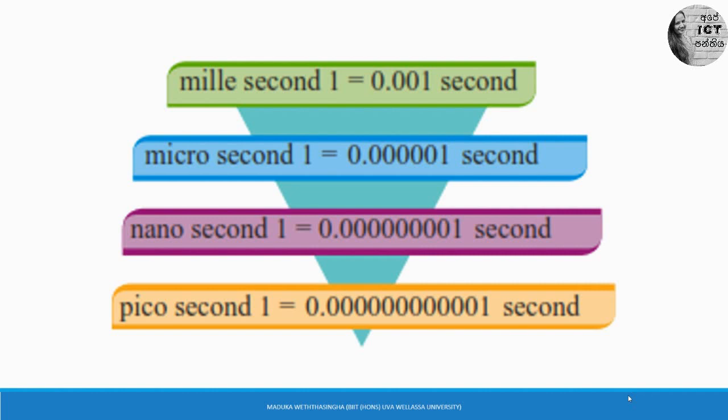From here we are going to stop the first lesson. In the first lesson, we learned about the CPU — what is CPU, where is it located, what are the main components, what is clock speed, and about the generation, meaning the evolution of computers.